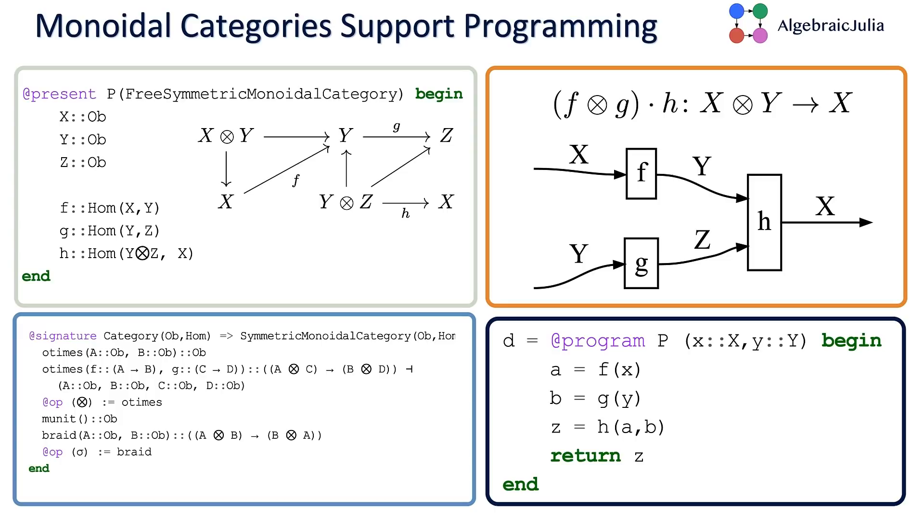To express more interesting programs, you have to move into a more powerful theory, which is symmetric monoidal categories. These are categories with tupling. You can think about having a pair of objects, and that's still an object. It's monoidal because there's this product type where you can take any two types and construct a pair.